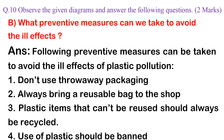B. What preventive measures can we take to avoid the ill effects? Answer: The following preventive measures can be taken to avoid the ill effects of plastic pollution: 1. Don't use throw-away packaging. 2. Always bring a reusable bag to the shop. 3. Plastic items that can't be reused should always be recycled. 4. Use of plastic should be banned.